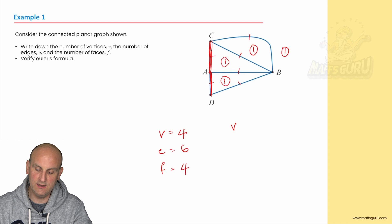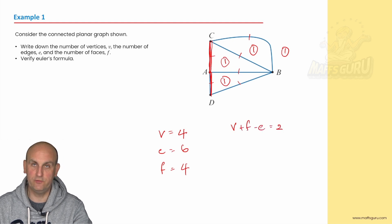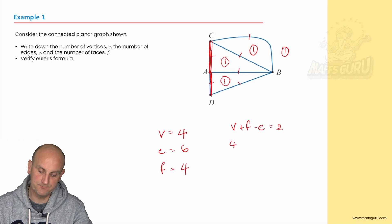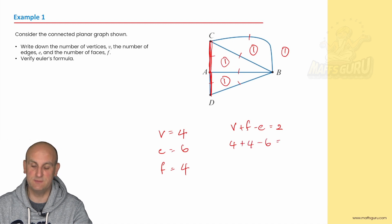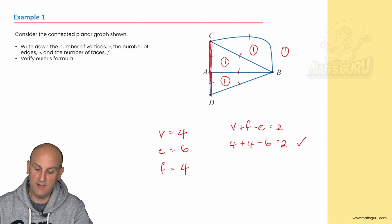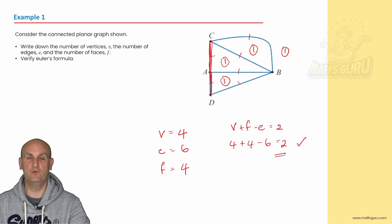So now let's verify Euler's formula. Euler's formula said V plus F minus E must equal 2 for it to be planar. So vertices 4 plus the number of my faces which is 4 minus the number of edges 6. Does 4 plus 4 minus 6 equals 2? 8 minus 6 is 2. And there we go. I have verified Euler's formula.